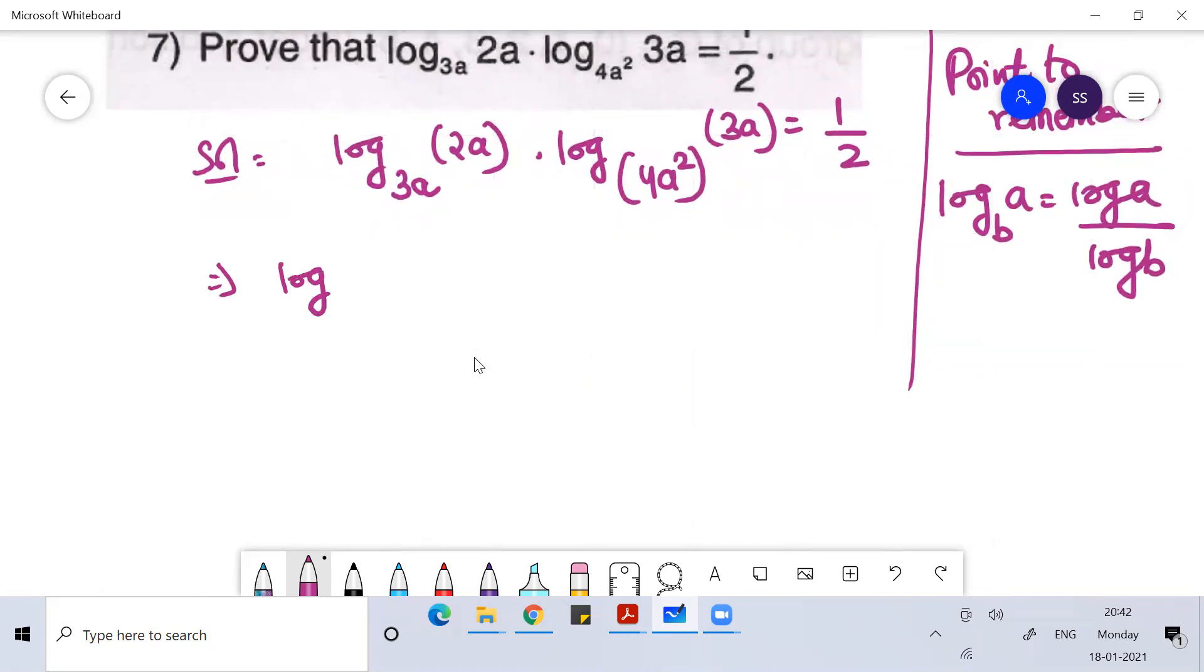So this is log 2A by log 3A. If I'm multiplying this with this, this will be log 3A by log 4A square equal to 1 by 2. Fine, everyone.